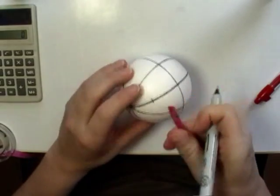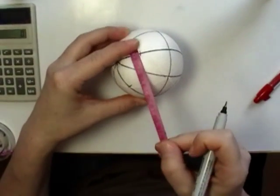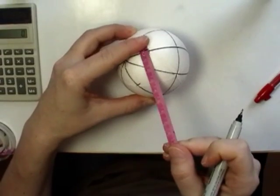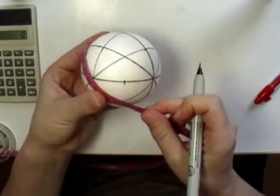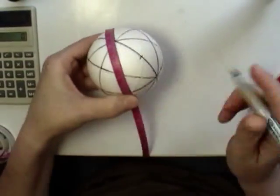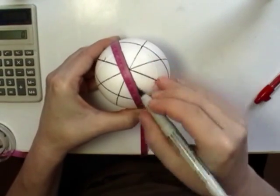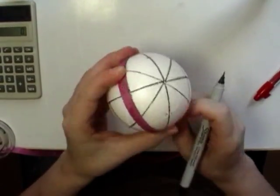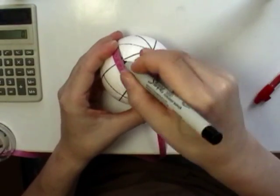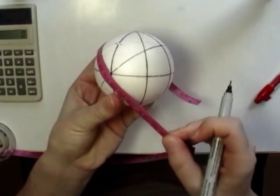Now you're going to start at the right. Go down to the left through that equator point and down and around, continue around the ball making a new circle that's crisscrossing that other circle that you just drew.